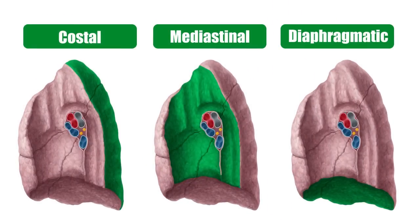Each lung also has three surfaces — the costal, the mediastinal, and the diaphragmatic — which are named after the adjacent anatomical structure which that surface faces. The mediastinal surface connects the lungs to the mediastinum via its root. The root of the lung contains the main stem or lobar bronchi, the pulmonary vessels and bronchi as well as the bronchial vessels, lymphatics, and autonomic nerves.